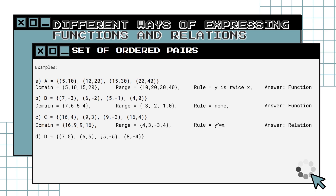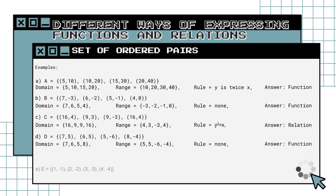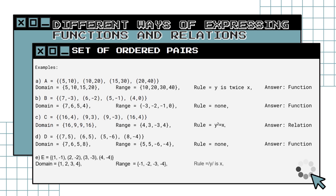Example D: extract the domain, range, and rule. The given set of ordered pairs is a function, for there is no repetition of values in the domain. Example E: extract the domain, range, and rule. The given set of ordered pairs is also a function, for there is no repetition of values in the domain.